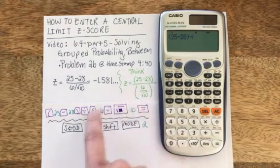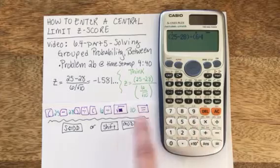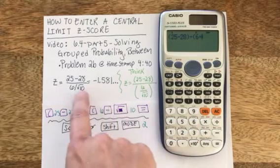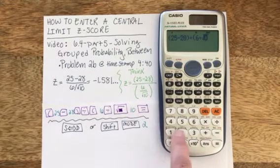Now I need to start the denominator, so I need a left parenthesis again, 6 divided by, and I want the square root, which on this particular calculator is a square with a solid little box in it. Then I can enter the 10.